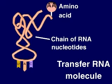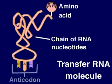Located on the bottom of the transfer RNA molecule are three nitrogen bases, called an anticodon, that pair up with messenger RNA codons during translation.